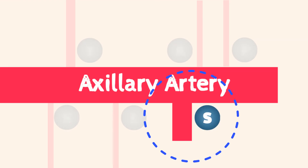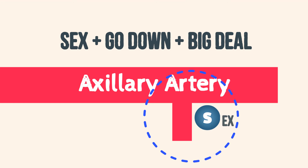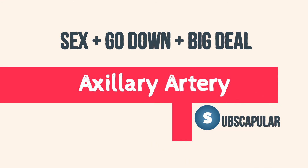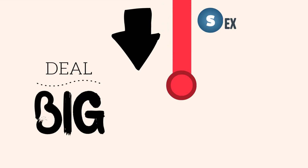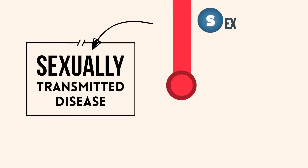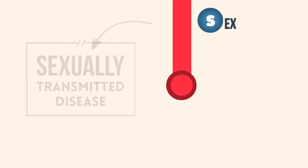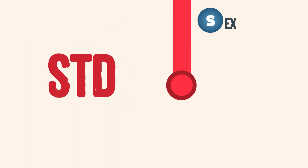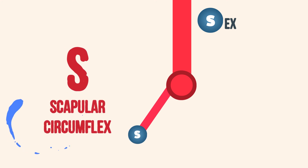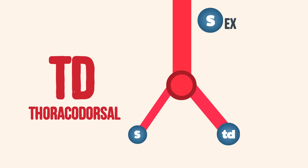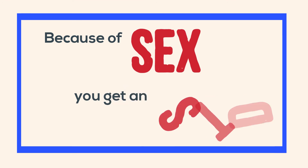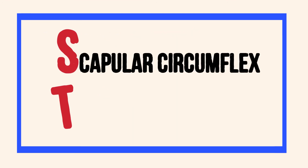Sex — the subscapular trunk — goes down and it's a big deal. And as you know, when you have sex, you get an STD. So STD stands for scapular circumflex artery and thoracodorsal artery. Because of sex, you get an STD: scapular circumflex artery and thoracodorsal artery.